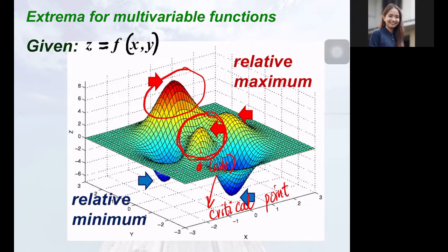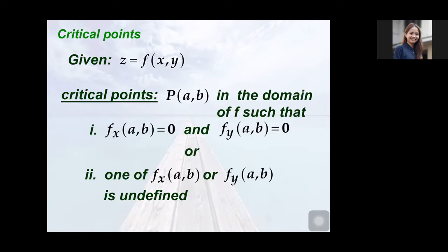This is how relative extrema of functions of two variables look like graphically. The important question now is how do we find these extreme values analytically? First is finding the critical points — again, the critical points now are ordered pairs. To find them, we will use partial derivatives. We find points AB that will make the partial with respect to x and y both zero, or one of them is undefined. Since we are dealing with more than one equation to satisfy, we will be solving a system of equations. Techniques such as elimination and substitution that you learned in high school may come in handy.